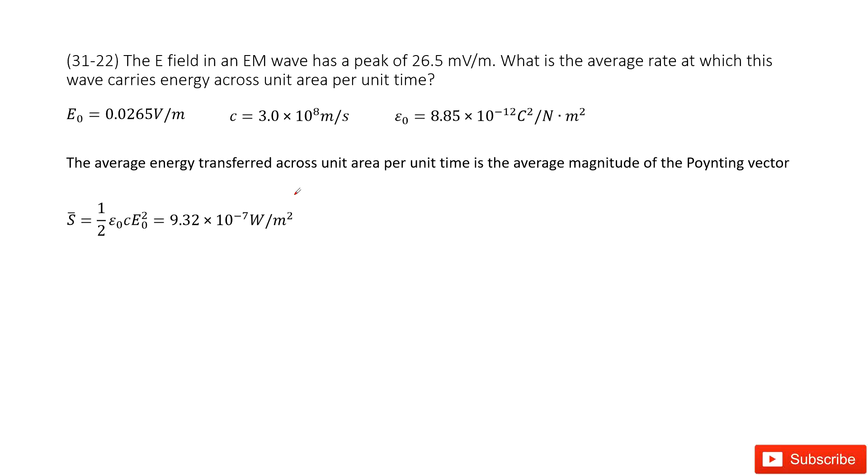Chapter 31 is about Maxwell equations and electromagnetic waves. Now we have the EM wave, and we know the E field is given, so we write it there, E0. The problem asks you to find the average rate at which this wave carries energy across unit areas per unit time.